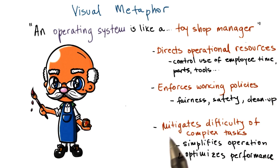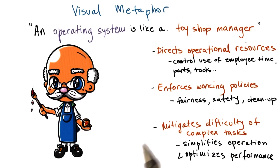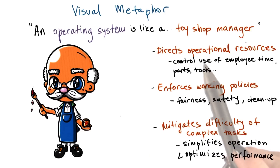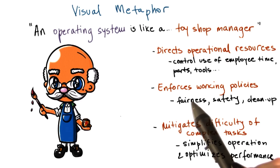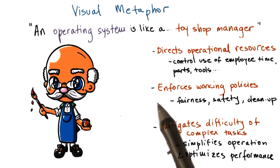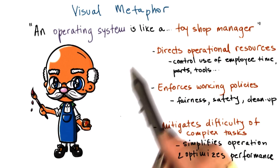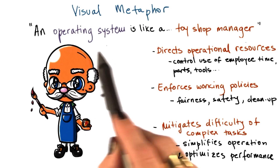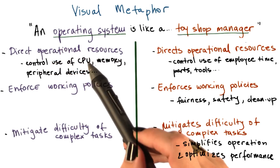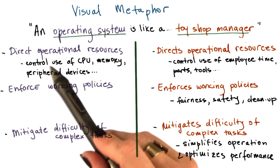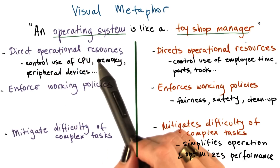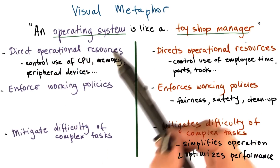So the toy shop manager has to deal with this situation so as to avoid much more complex tasks. So the question then is, what parallels are there between a toy shop manager and an operating system? Operating systems, too, direct operational resources.